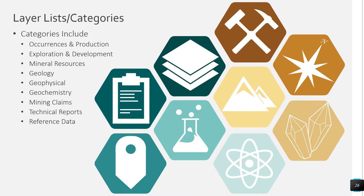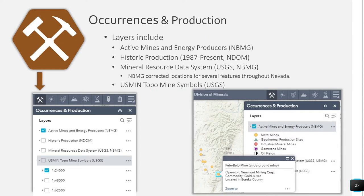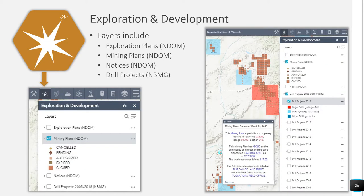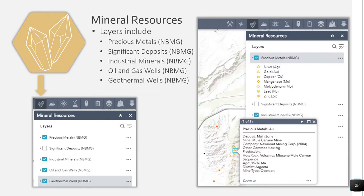Occurrences and production includes layers containing active mines and energy producers, historic production from 1987 through the present, mineral resource data system, and the USMIN topo mine symbols. The exploration and development category includes exploration plans, mining plans, notices, and drill projects from 2005 through 2018. The mineral resources category includes precious metals, significant deposits, industrial minerals, oil and gas wells, and geothermal wells.